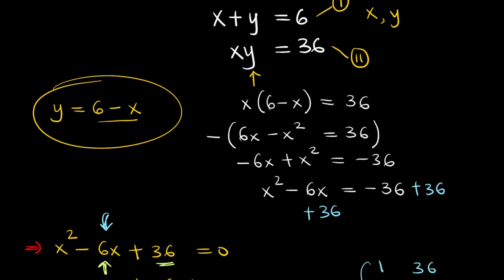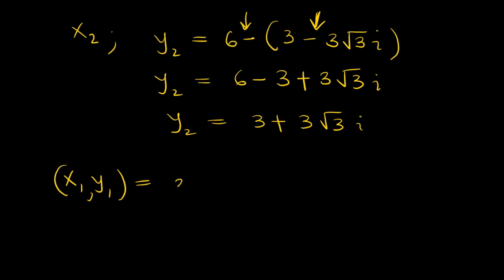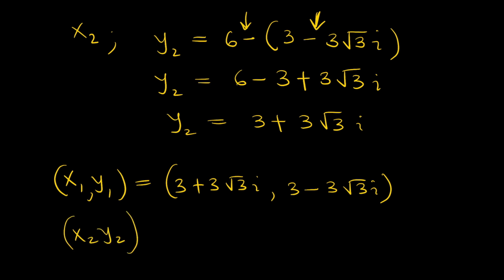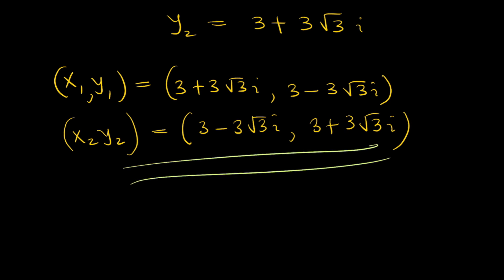So we have four values for this problem. The solution pair (x1, y1) is (3 plus 3 root 3 i, 3 minus 3 root 3 i), and the solution pair (x2, y2) is (3 minus 3 root 3 i, 3 plus 3 root 3 i). There you have it — those are your final answers. I hope you've enjoyed this video. Please hit that like button and subscribe to my channel if you are yet to do so, and I'll see you in my next video.